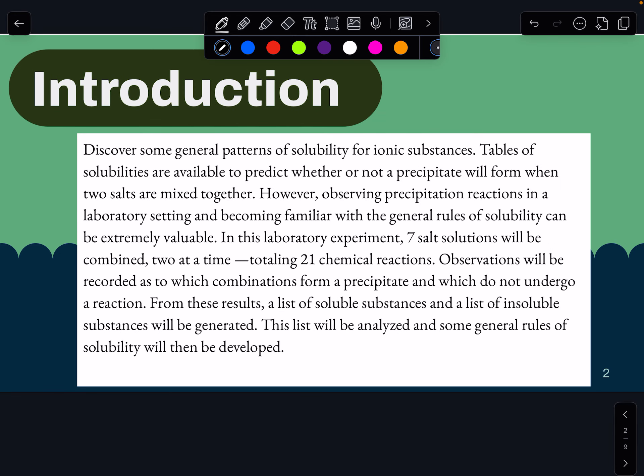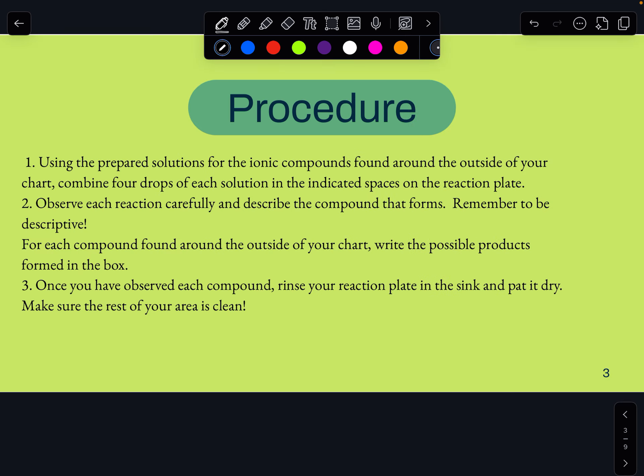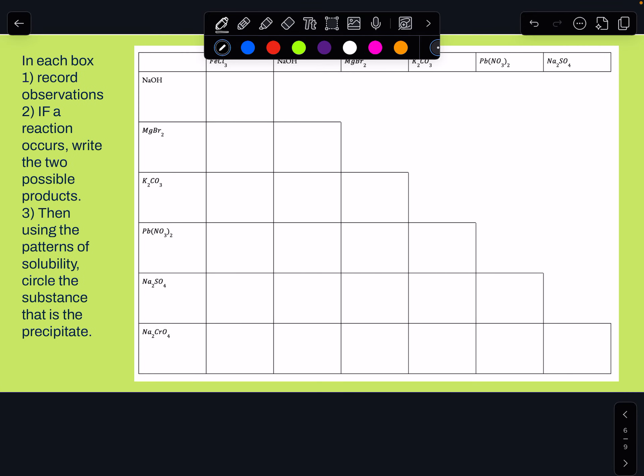Once again in the lab, the idea is you'll see a total of 21 different chemical reactions, observing which ones form a precipitant and which ones do not, and then from these results we'll be able to identify what we actually created using those rules of solubility we talked about before. The basic procedure is just mixing two different things together and observing what happens. Go ahead and flip in your lab notebook to a page that looks like this, this is where you'll record all the data in the lab, it's on the very last page.